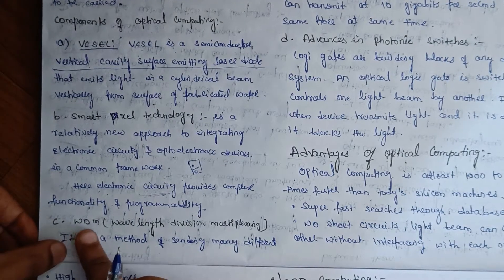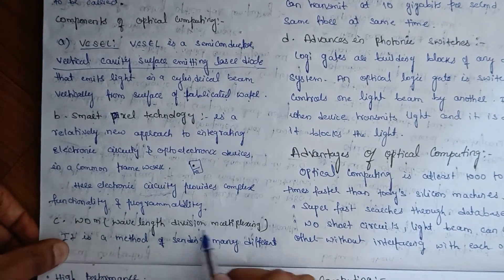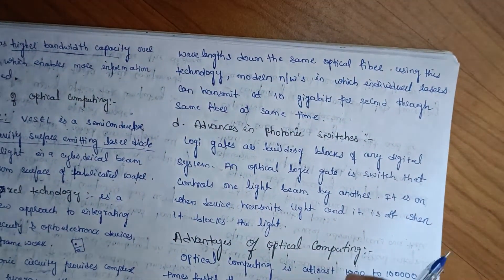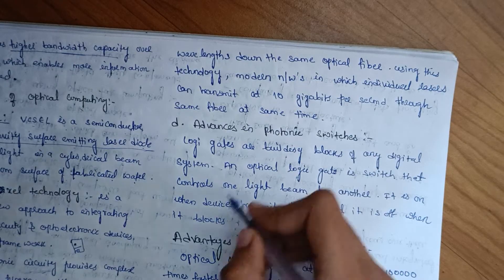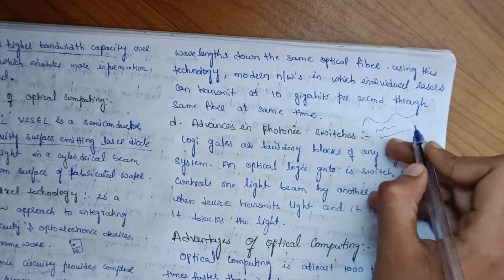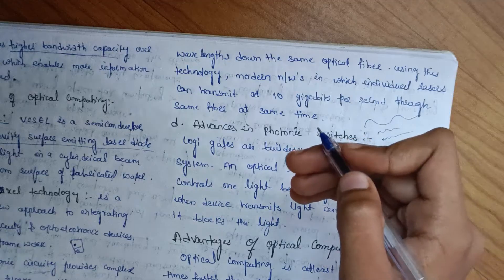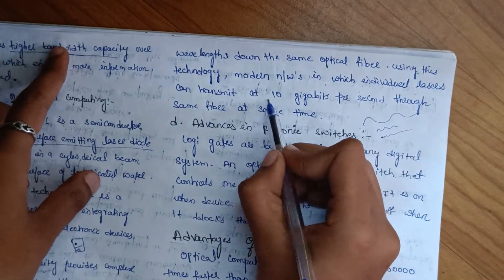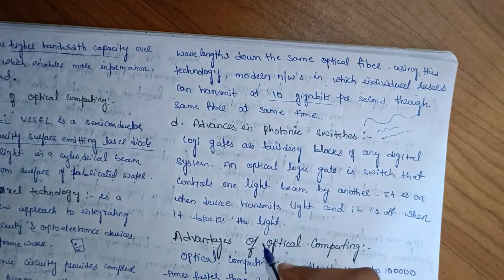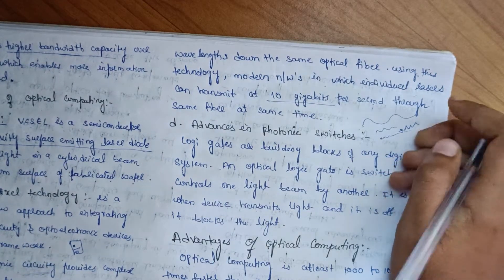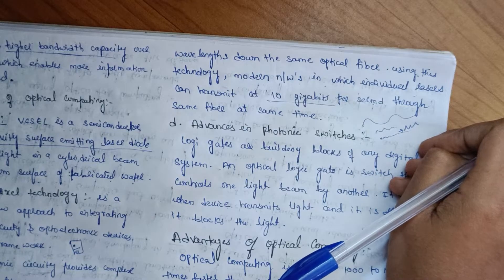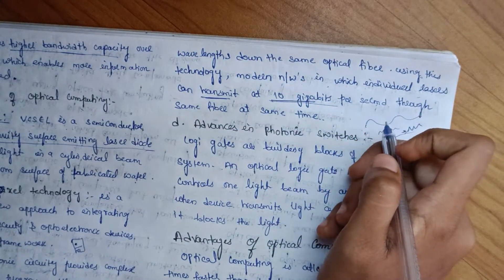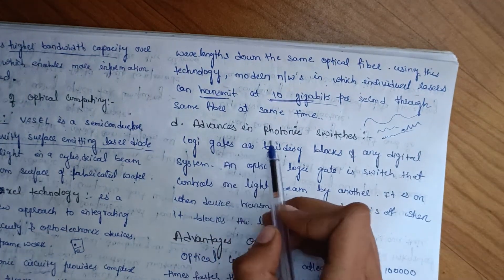WDM is abbreviated as Wavelength Division Multiplexing. It is a method of sending many different wavelengths down the same optical fiber. Using this technology, modern networks in which individual lasers can transmit 10 gigabytes per second on the same fiber at the same time. Advances in photonic switches.